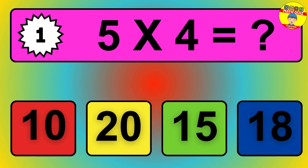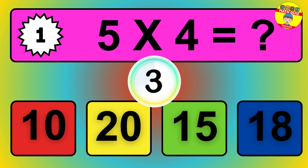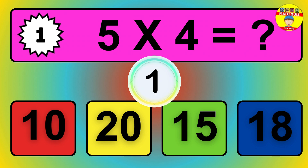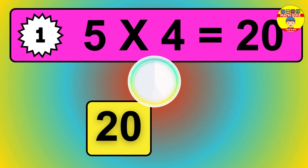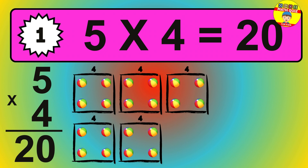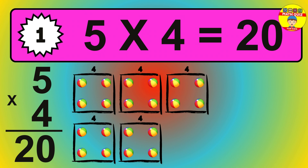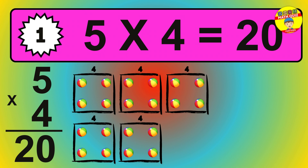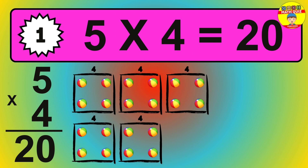Question 1. 5 times 4 equals what? The answer is 5 times 4 is 20. To calculate, we have 5 groups with 4 balls each one. So, how many balls do we have? 20 balls.